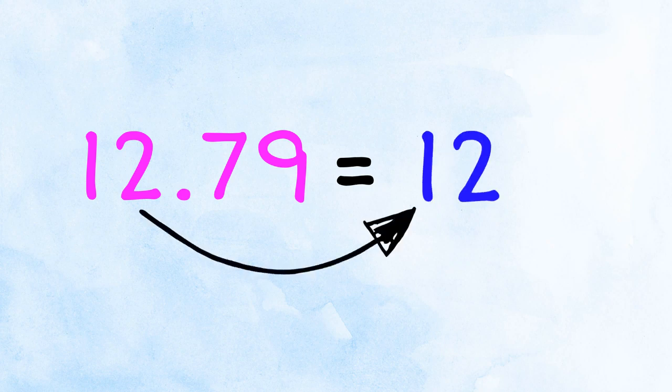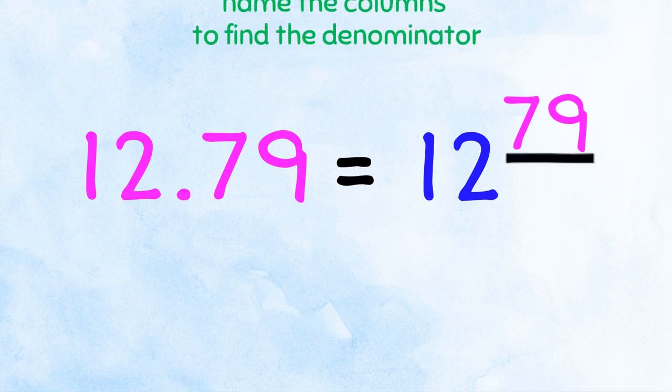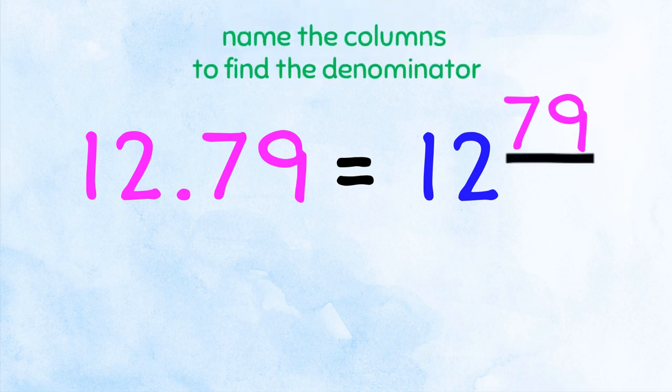Great stuff! Last one. 12.79. 12 whole ones! And here, 79 is our numerator. Name the decimal columns to find the denominator.